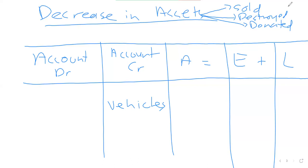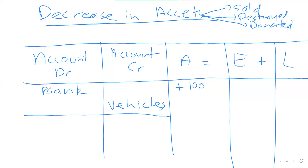Let's say the vehicle you bought for 150,000 you decided to sell after three years for 100,000 rands. The vehicle account will be credited because vehicles are being reduced by selling them. The double entry says for every debit there should be a corresponding credit. If I'm crediting vehicle, I'm going to debit bank because money will flow into the business. So for assets it's plus 100,000 to show money coming in.